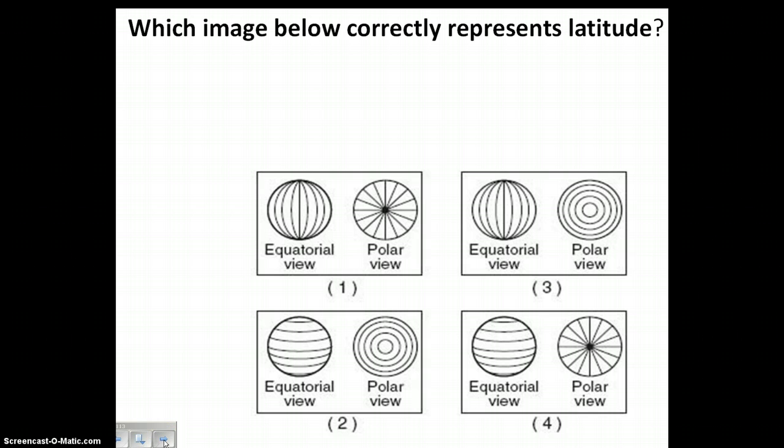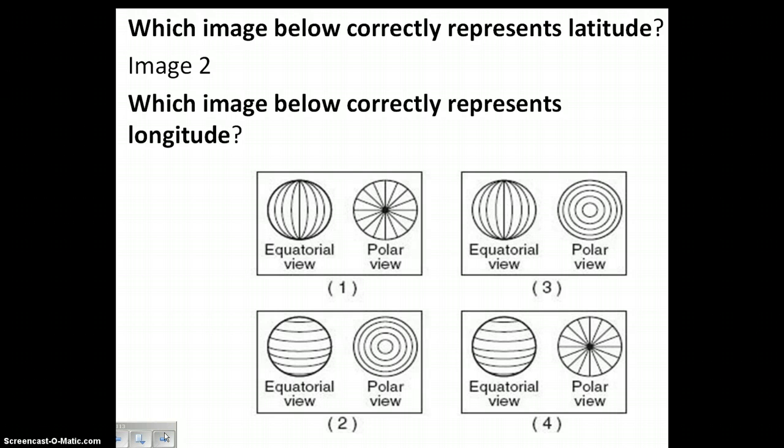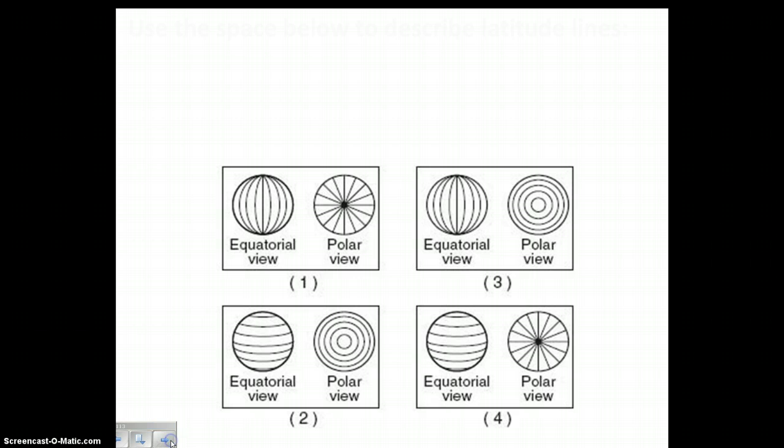So which image below correctly represents latitude? So pause it and try to answer on your own. And I'm going to move ahead. So image two would represent latitude because from the equatorial view, that's the side view. And from the polar view, you'd be looking at it from that direction. Again, I'll try this one. Which image below correctly represents longitude? So give it a pause. Give it a try. Write down a number. And there you go. It's image one. This is just based on the previous notes, previous page.